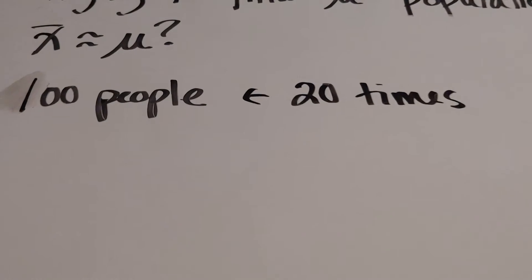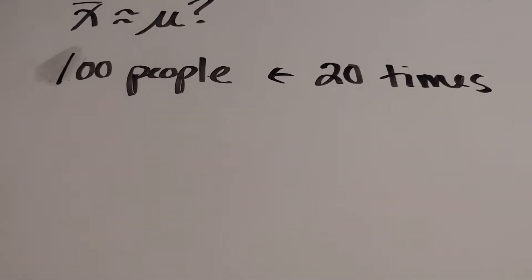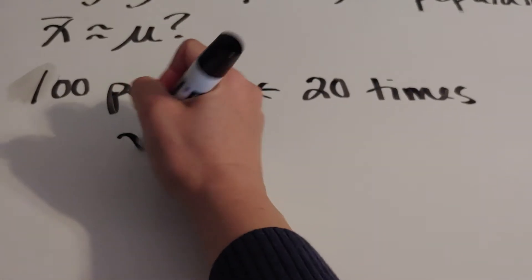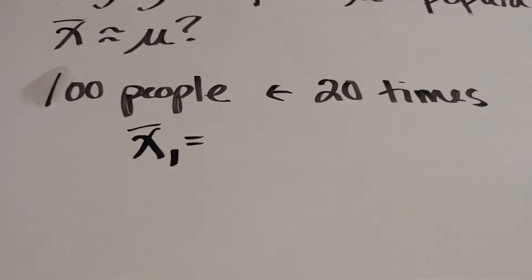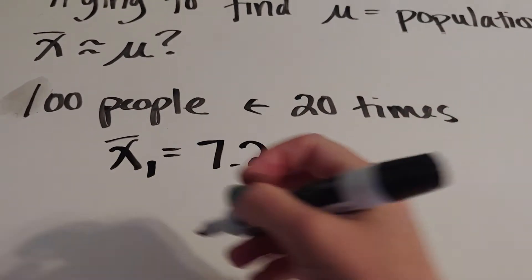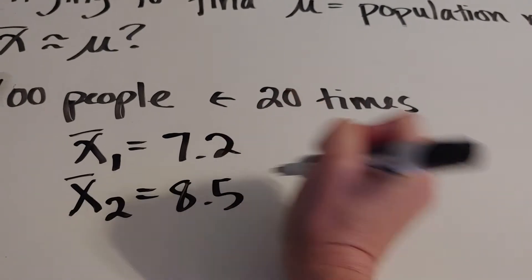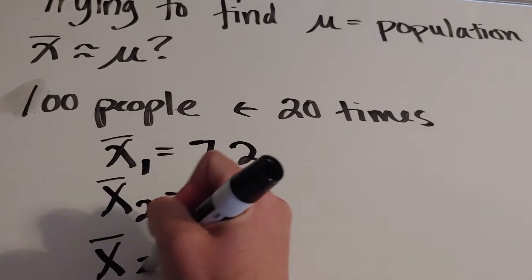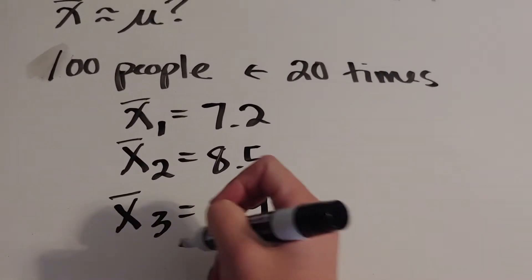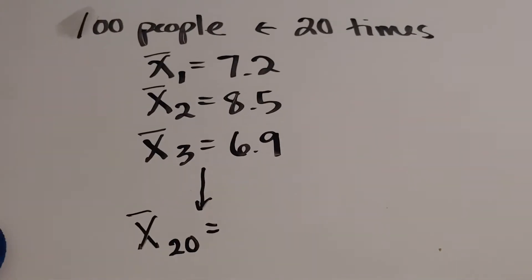Okay, so remember my question. I'm going to survey 100 people and ask how many shows they binge watched on Netflix during quarantine. So let's say the first 100 people, when I take that sample, I get the answer of 7.2 shows. The next sample, I get 8.5. The next sample, I get 6.9. So we're going to do this 20 times, so I'm going to have 20 X̄s.